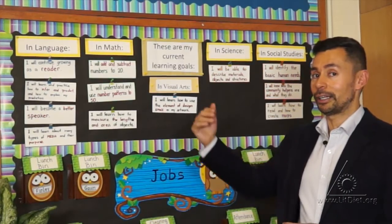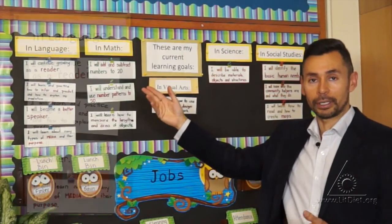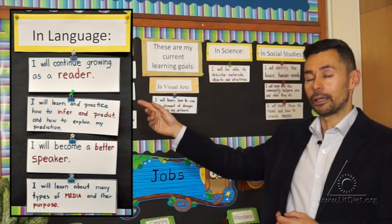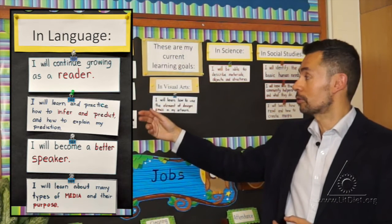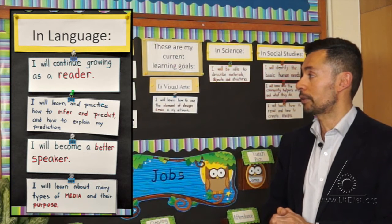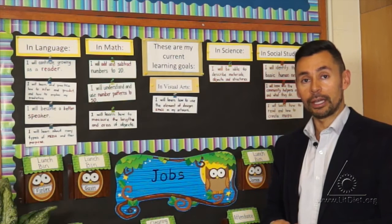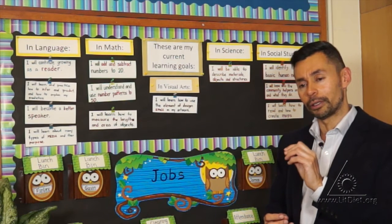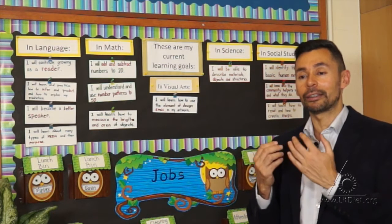For example, in language I have learning goals for reading, which is becoming a better reader. But in writing right now, we're working on inferencing and prediction. You can see here that it says: 'I will learn and practice how to infer and predict and how to explain my prediction.' That's the learning goal, and I told them that 'explain my prediction' means saying why.